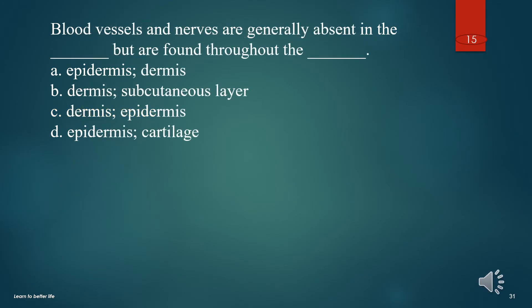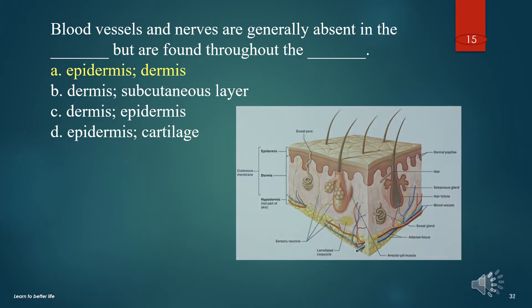Blood vessels and nerves are generally absent in the what layer but are found throughout the? A. Epidermis, dermis. B. Dermis, subcutaneous layer. C. Dermis, epidermis. D. Epidermis, cartilage. The answer is A. Epidermis, dermis.